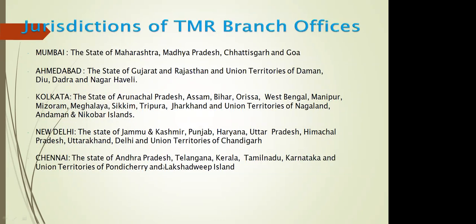Regarding Indian trademark offices: based on geographical location, there are five branch offices of the Trademark Registry — Mumbai, Ahmedabad, Kolkata, New Delhi, and Chennai. Chennai has jurisdiction over Andhra Pradesh, Telangana, Kerala, Tamil Nadu, Karnataka, and the union territories of Pondicherry and Lakshadweep. Similarly, different states fall under their respective jurisdictions.